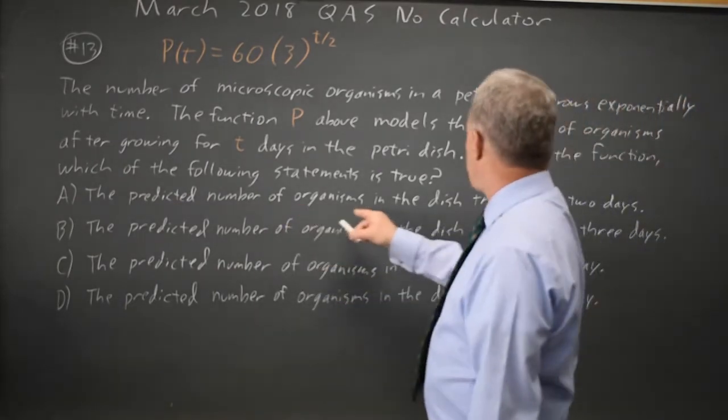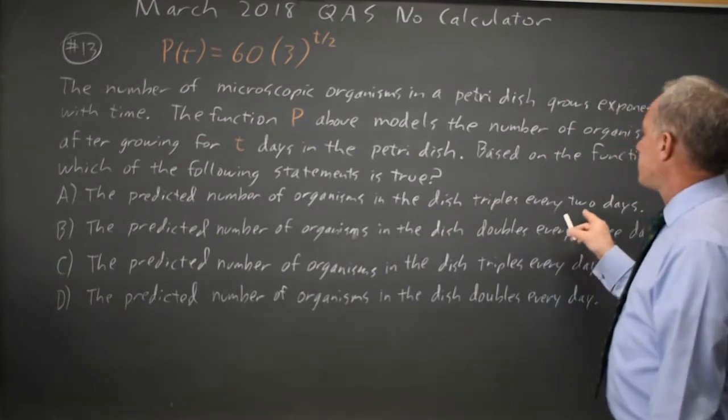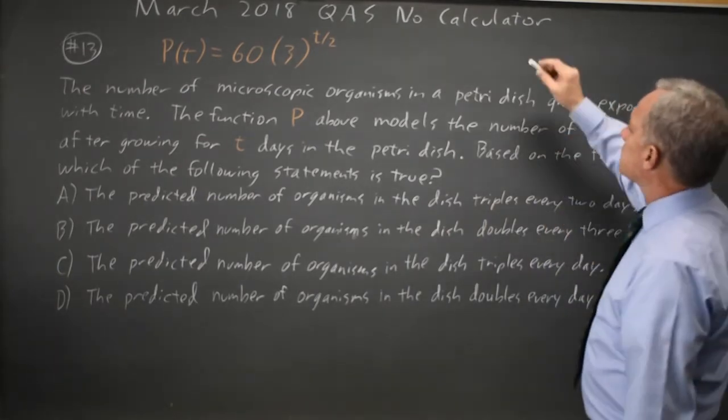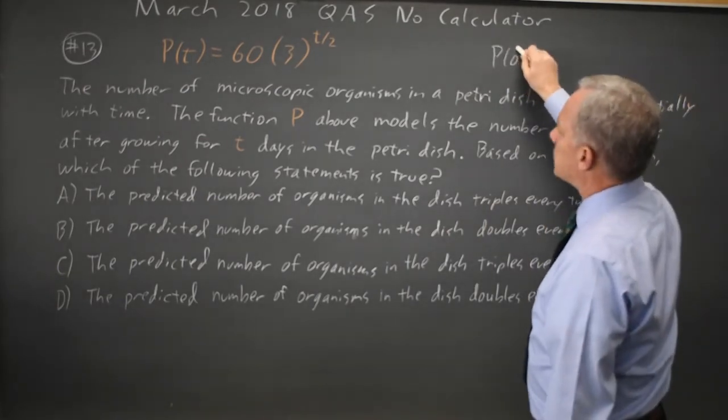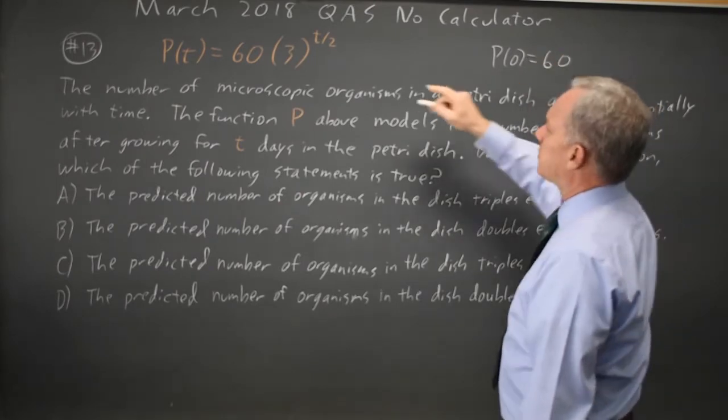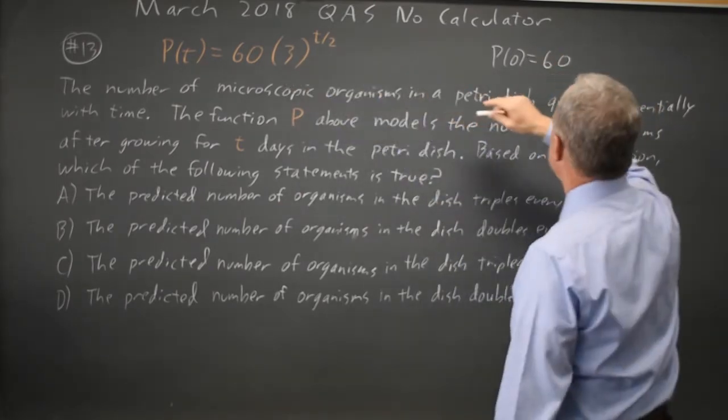Choice A says the predicted number triples every two days. So let's look at P of 0, which is 60 times 3 to the 0, which is 60 times 1 is 60.